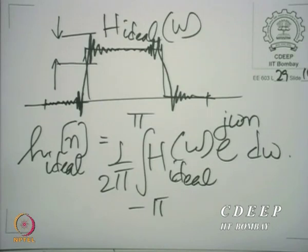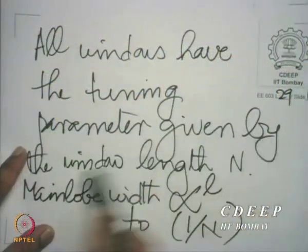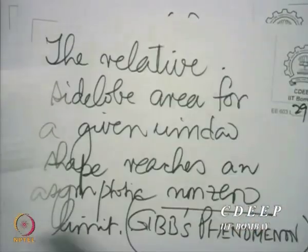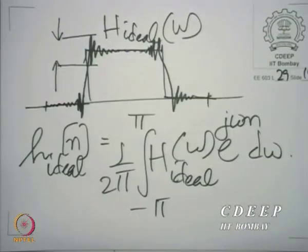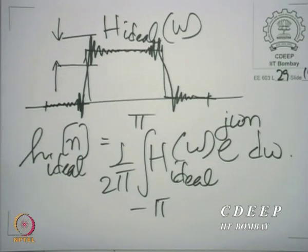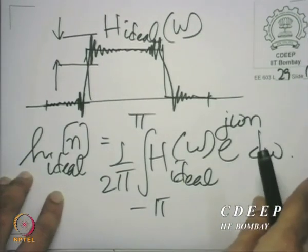All windows have the tuning parameter given by the window length N, so all windows can give you as small a transition band as you desire. But once you have chosen a window, you have fixed the maximum deviation in the passband and stopband. The tolerance of the passband and stopband cannot be influenced beyond that point. You can influence the transition band but not the tolerance. The passband and stopband tolerances are equal.